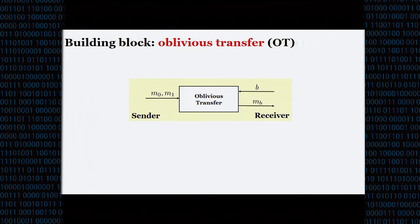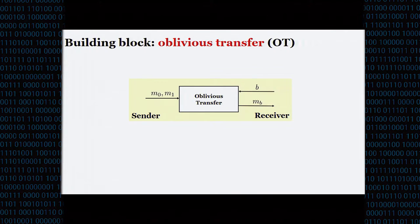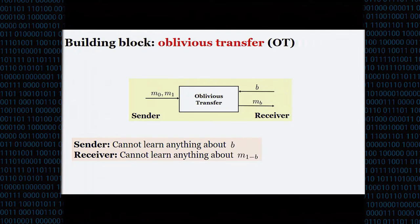Oblivious transfer is a two-party protocol between a sender and a receiver. The sender inputs two messages m0 and m1. The receiver inputs a bit b and gets its output m_b. The security notions are that the sender should not be able to learn anything about the bit input by the receiver, and the receiver should not be able to learn anything about the other message.